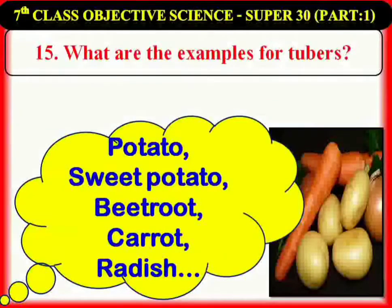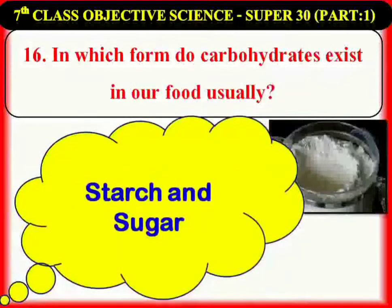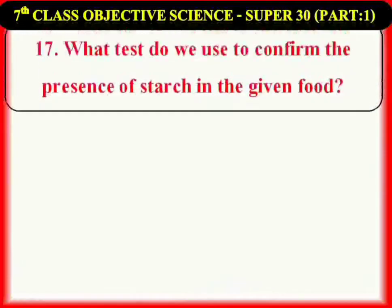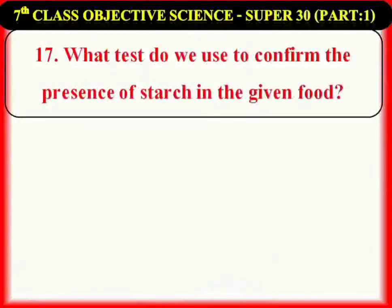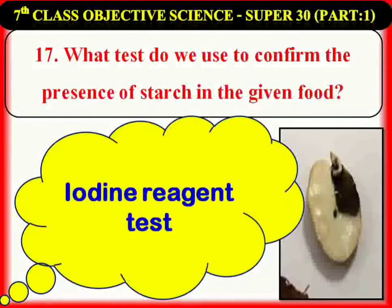What are the examples for tubers? Potato, sweet potato, beetroot, carrot, radish, etc. In which form do carbohydrates exist in our food usually? Starch and sugar. What test do we conduct to confirm the presence of starch in the given food? Iodine reagent test.